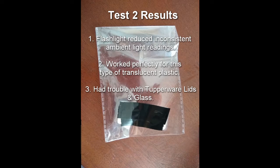Okay, test two worked perfectly. The flashlight really helped reduce those inconsistent readings caused from ambient light. This translucent plastic also worked really, really well for this test. It wasn't shown, but I did try Tupperware and glass lids and that just gave really erratic readings. Most likely due to the refraction of the light through those types of materials.